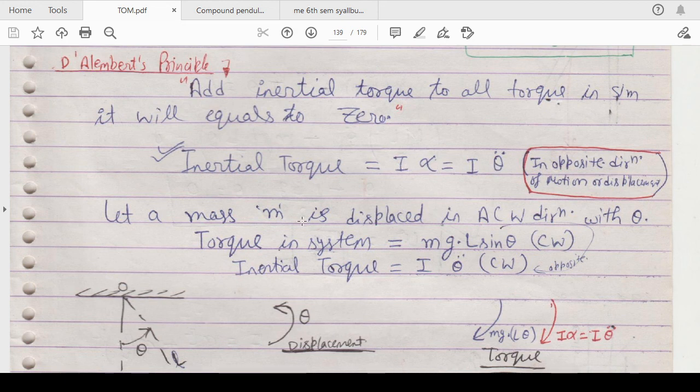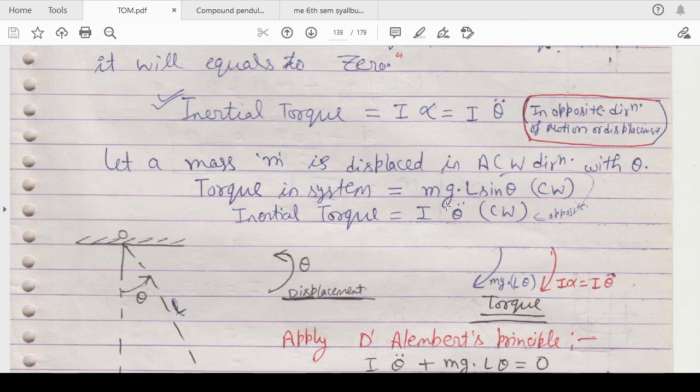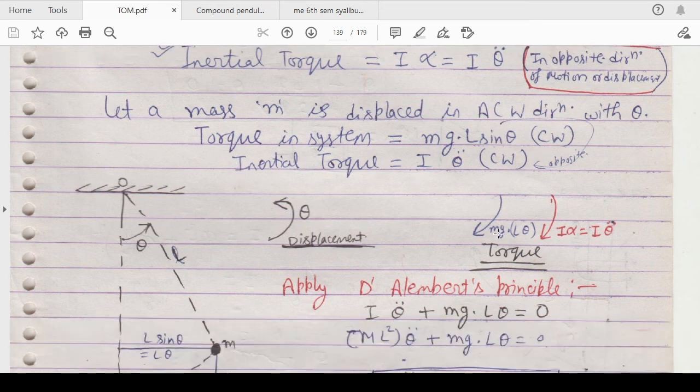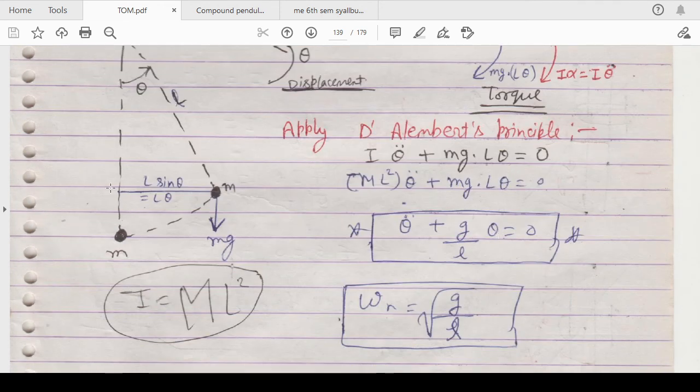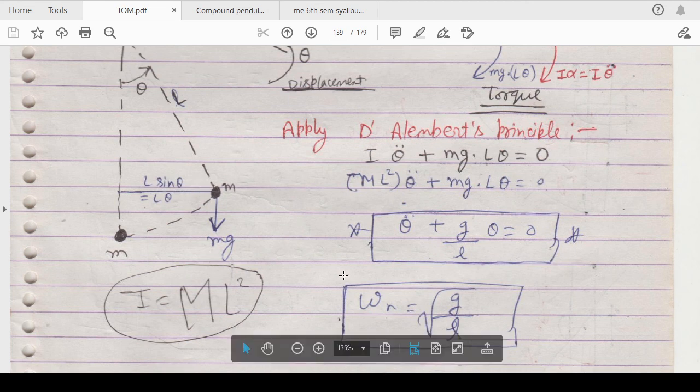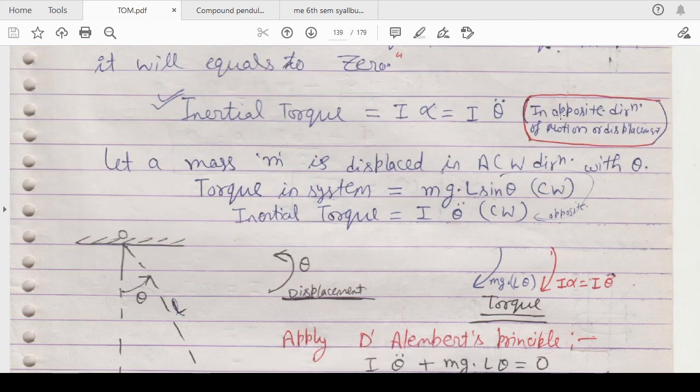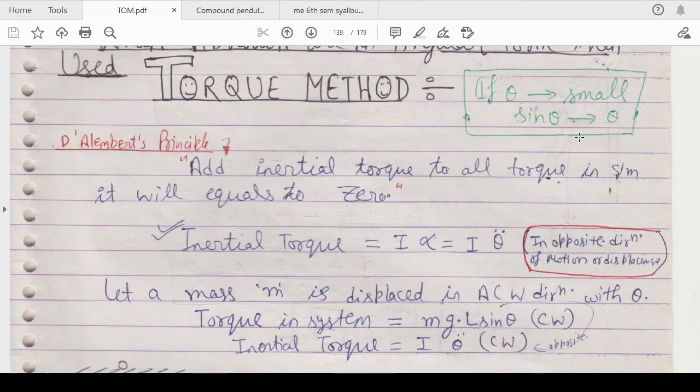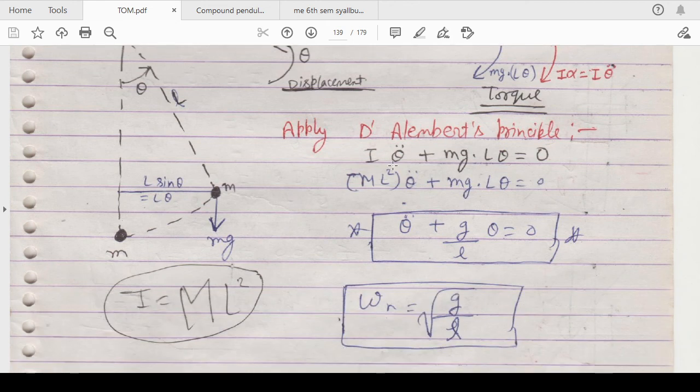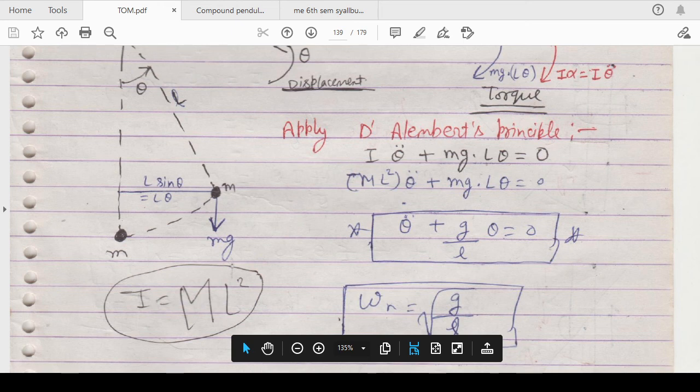Let a mass m be displaced in anticlockwise direction with theta. Then torque will be equals to mgl sine theta. You have also seen this in the compound pendulum. Now if you apply D'Alembert's principle as you can see in the figure, this is l sine theta, this is mg, so your torque will equal mgl sine theta. Since theta is very small, sine theta equals theta. So I theta double dot plus mgl theta equals zero.